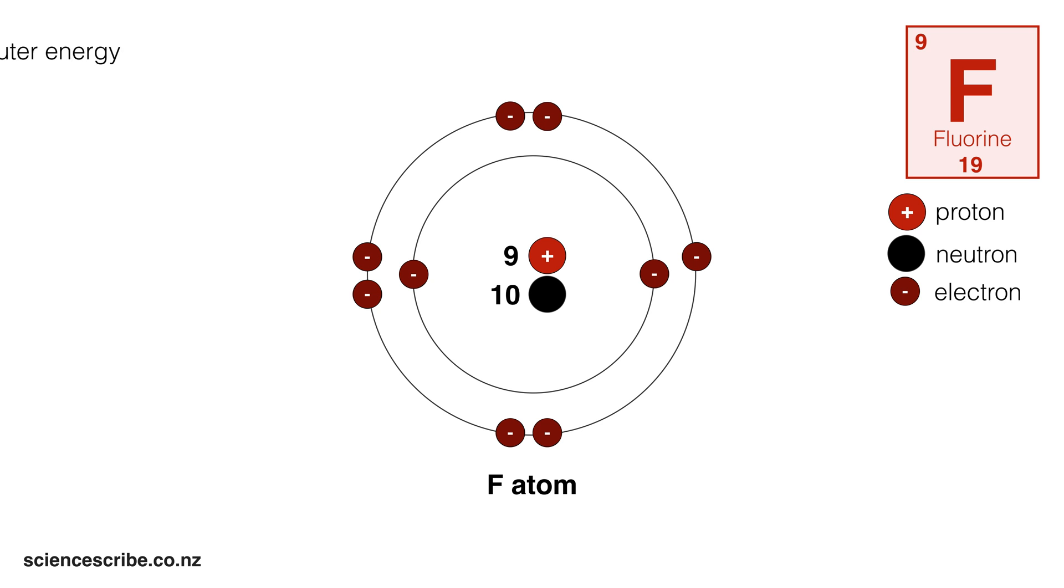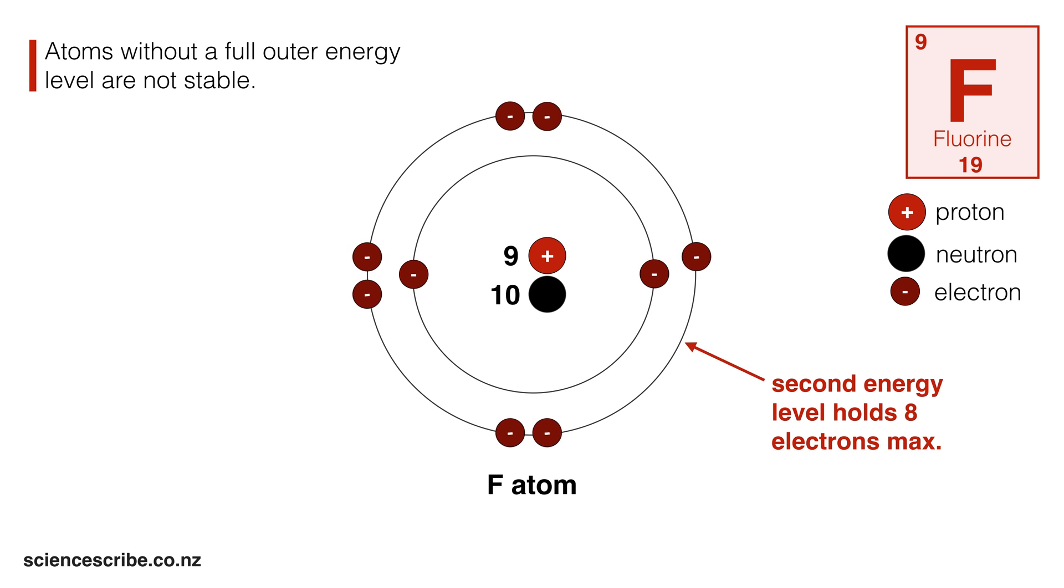However, here's a new piece of information for you. Atoms that don't have a full outer energy level aren't stable. In the case of the fluorine atom, you can see that I've only got 7 electrons in my outermost shell, when you know that the second shell can hold a maximum of 8.